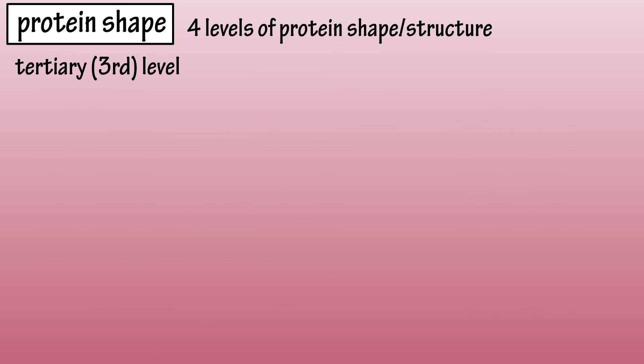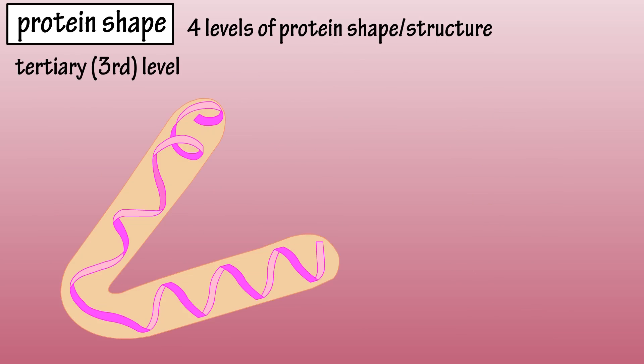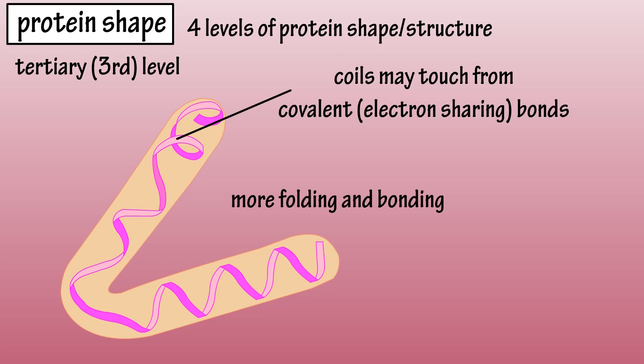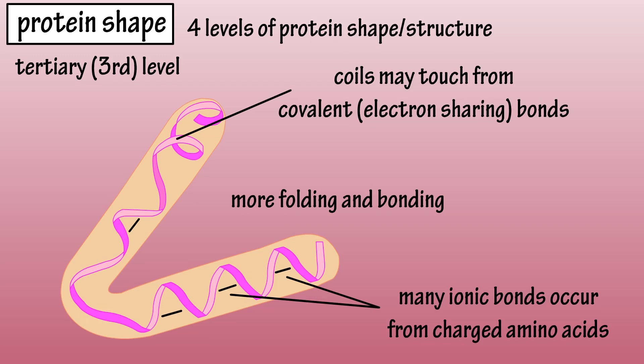The tertiary or third level of protein structure involves more folding and bonding of the secondary structure. The coils may touch as covalent bonds form from electron sharing between different amino acids. Most twists and folds result from ionic bonds between positively and negatively charged R groups of amino acids.